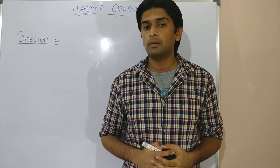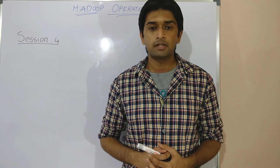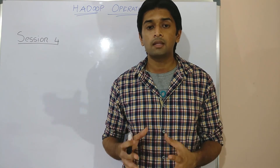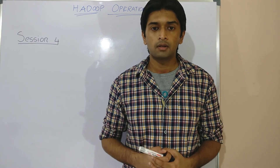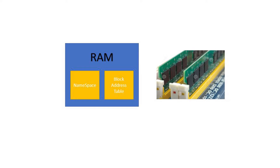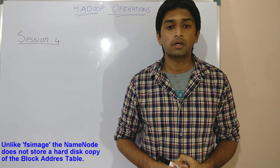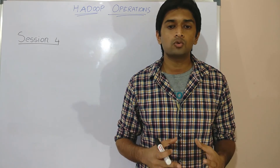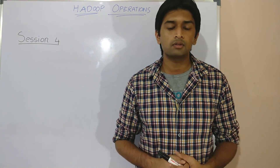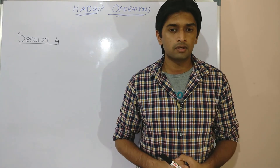The name node is responsible for storing two important pieces of information: the file system state or namespace, and the block address information. Till now we have covered only the namespace part. Just like the namespace, the name node maintains the block address table in its random access memory. However, unlike FS image, the name node does not store a local copy of the block address table on disk. We will learn more about this once we cover the topic of data nodes.